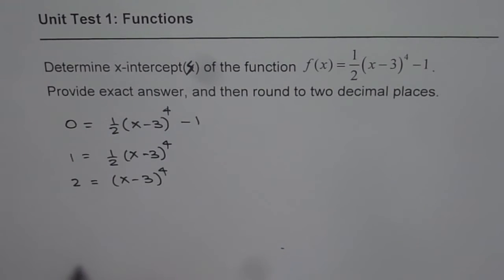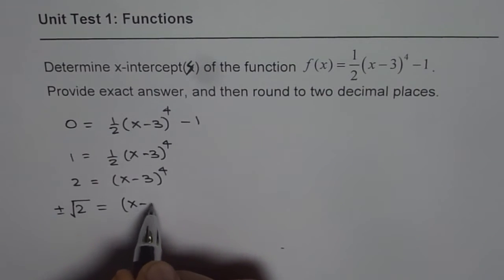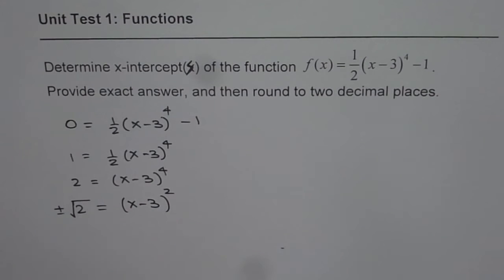Now it's degree 4. What we will do is we will do first square root. So when we do square root of 2, we will get plus minus and here we get (x minus 3) whole square.